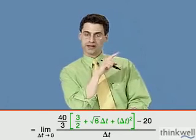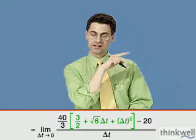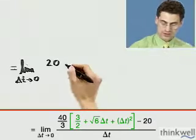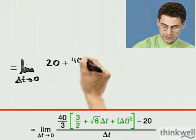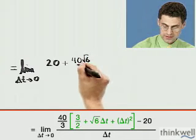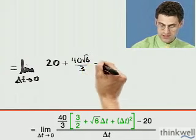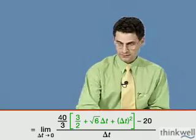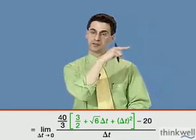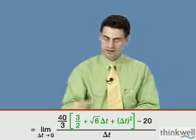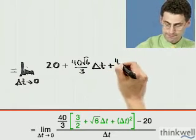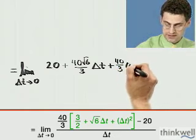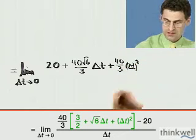When you distribute that 40 over 3 with the square root of 6 times delta t, you get plus 40 square root of 6 all divided by 3 times delta t. And when you take that 40 over 3 and multiply it by that last delta t squared, what you see is plus 40 over 3 over 3 delta t squared.